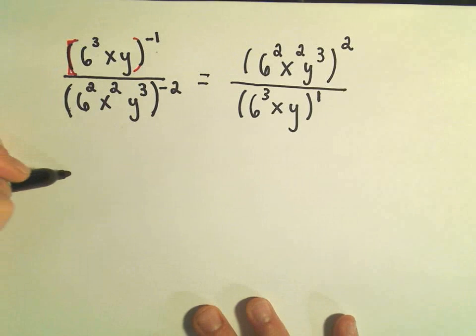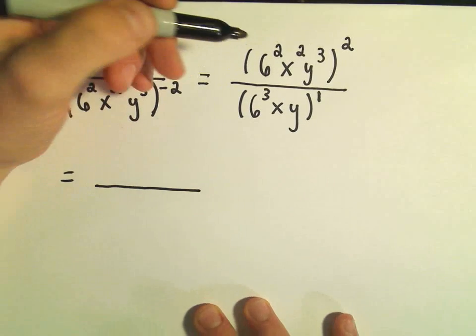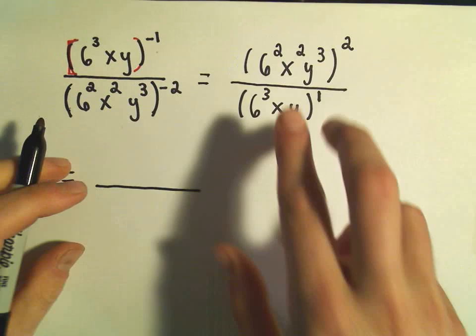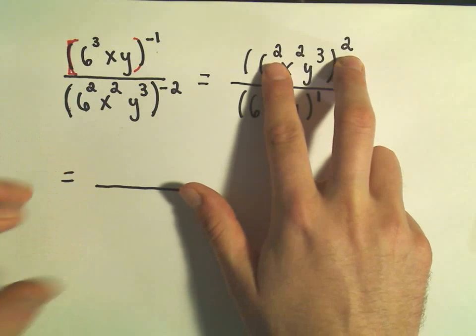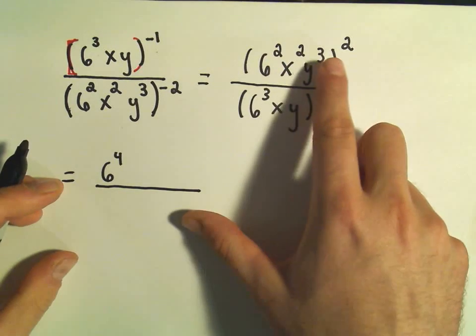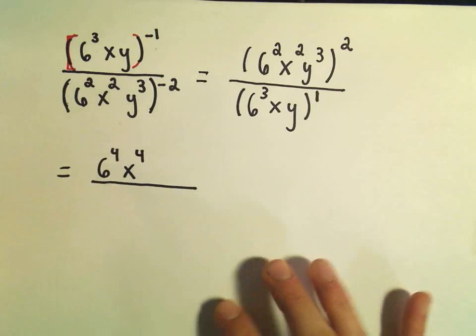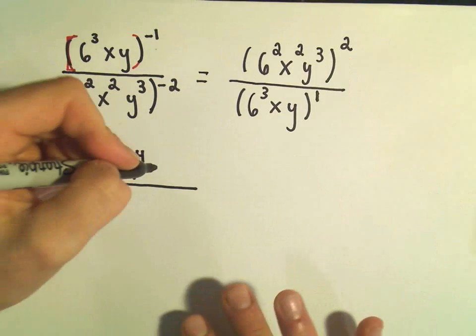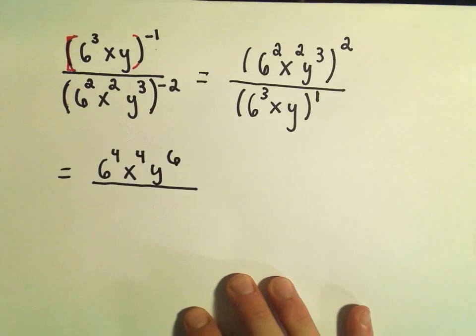And now we're just going to do the same thing as before, just try to simplify this a little bit. So again, I'm going to have to multiply exponents. So I've got 6 to the second squared. That'll give me 6 to the fourth power. I've got x squared squared. That'll be x to the fourth power. I've got y to the third squared. That'll be y to the sixth power.